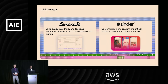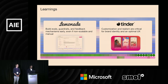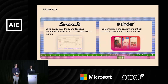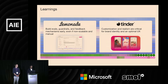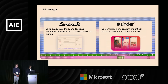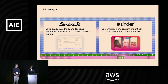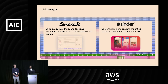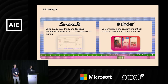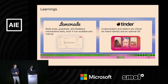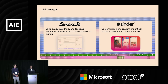Some learnings from others in the field: Lemonade, an AI insurance company, found that what made them successful was focusing really early on evals, guardrails, and feedback mechanisms for their team — even if it wasn't scalable at first, it made them move a lot faster in the end. And for Tinder, they realized that customization and brand realism was pretty important when launching their RizChat experience, so that's what they focused on, and it created a much better experience for their users.